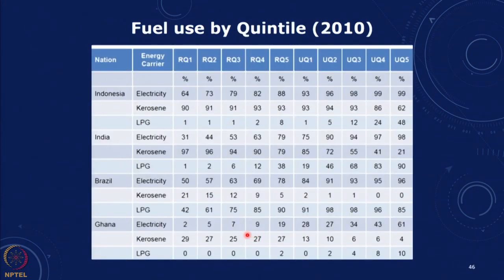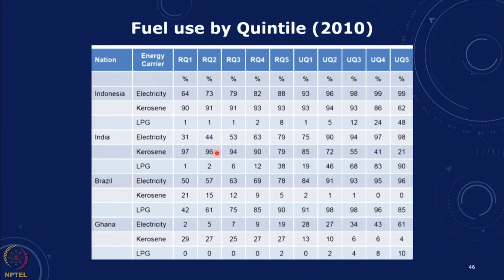Looking across different income classes using quintiles — dividing the population into five groups of 20 percentiles — we can see differences in rural and urban contexts. The lowest quintile has a smaller percentage using electricity; as income rises this goes to about 79 percent, and in urban areas almost 100 percent. The fuel mix is very dependent on income — lower income households use biomass, traditional biomass, and maybe kerosene for lighting.